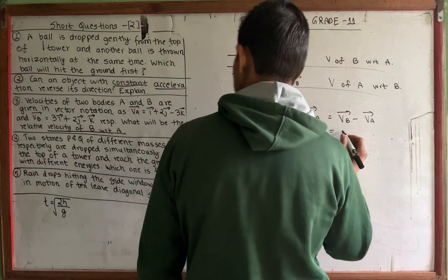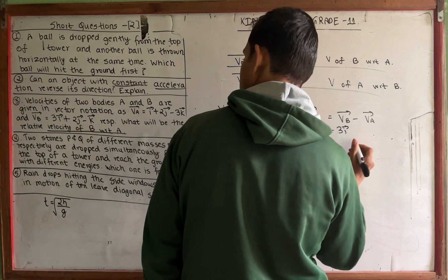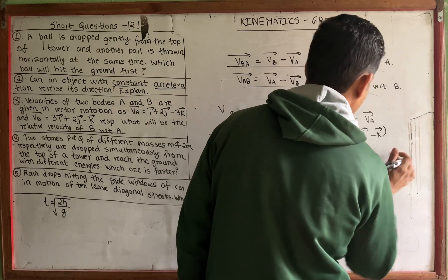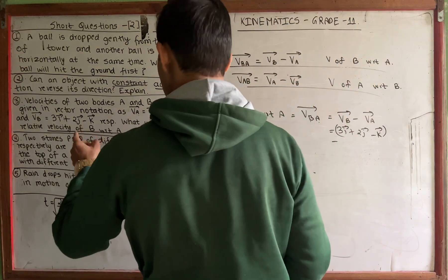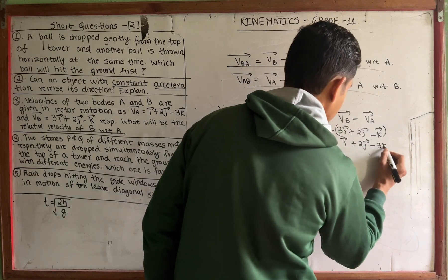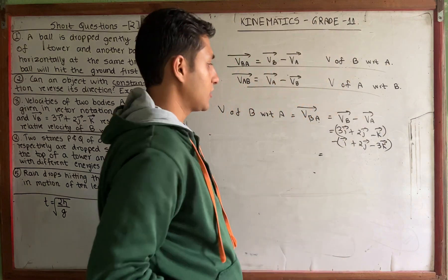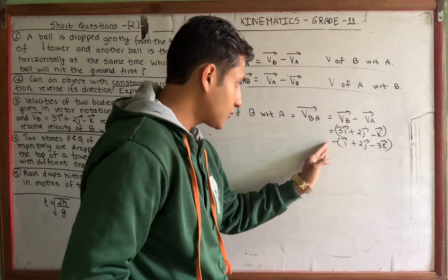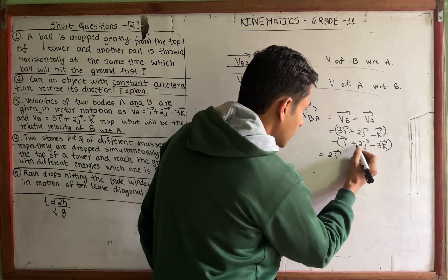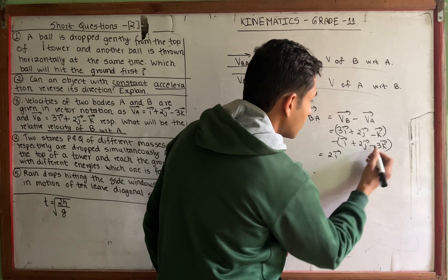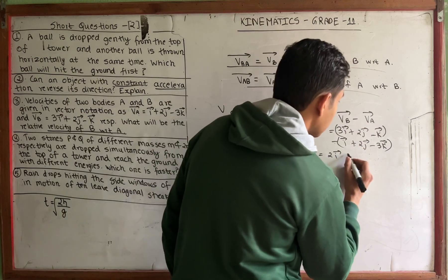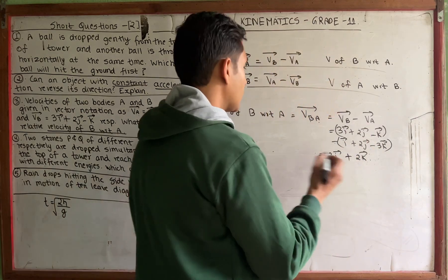Substituting the values: V_B = 3i + 2j − k, minus V_A = i + 2j − 3k. Calculating directly: 3i − i = 2i vector; 2j − 2j = 0; −k − (−3k) = +2k vector. So the answer for V_BA is 2i + 2k vector.